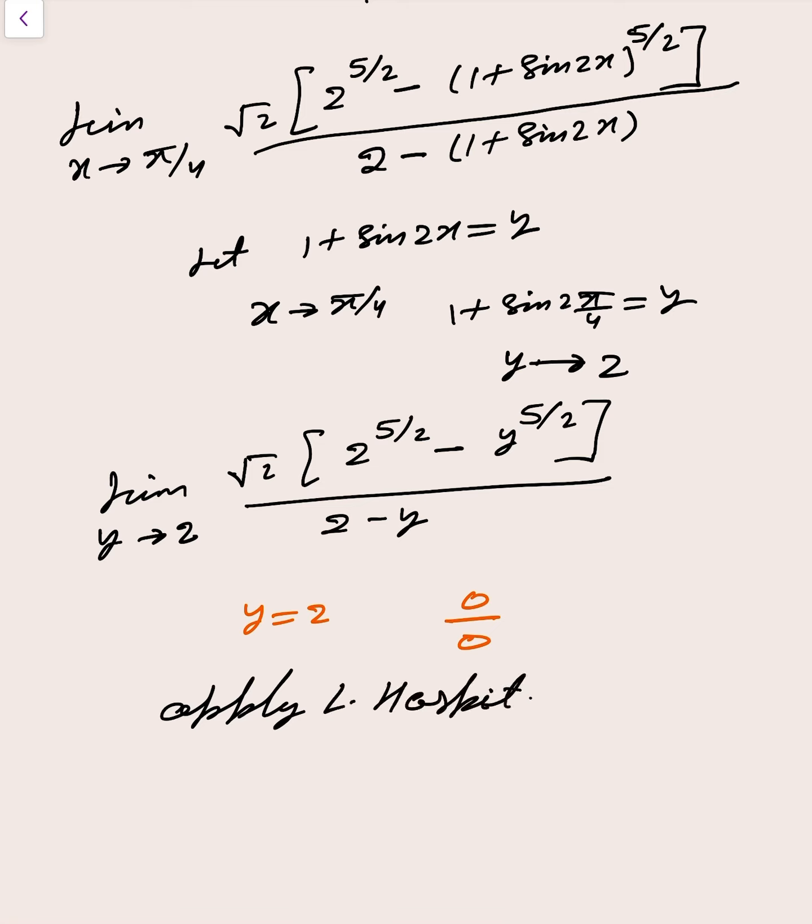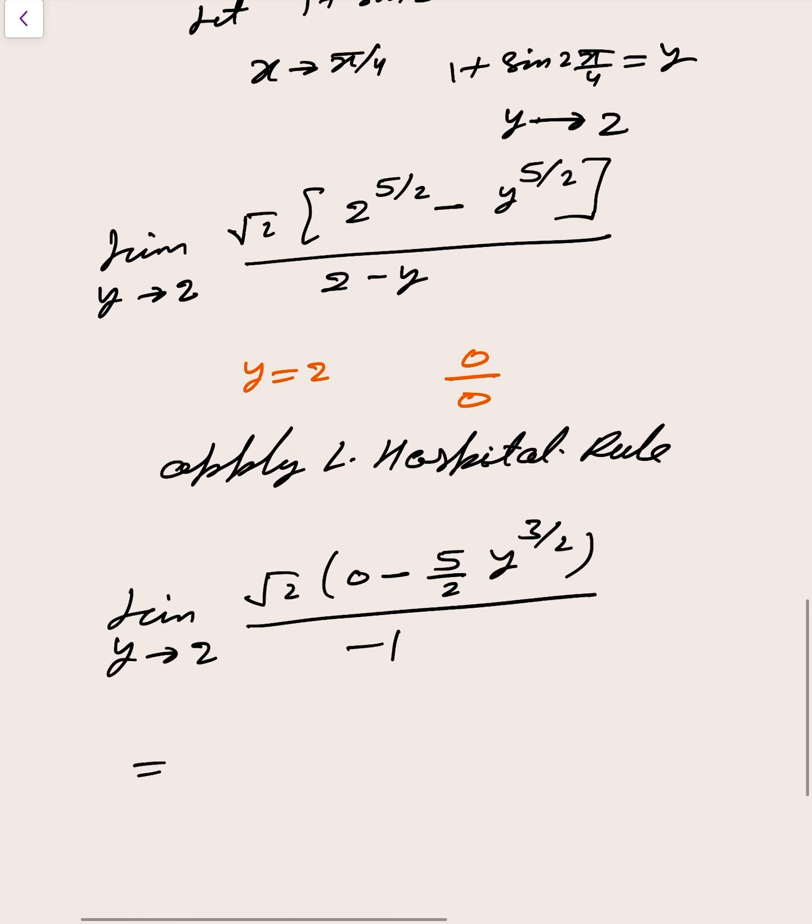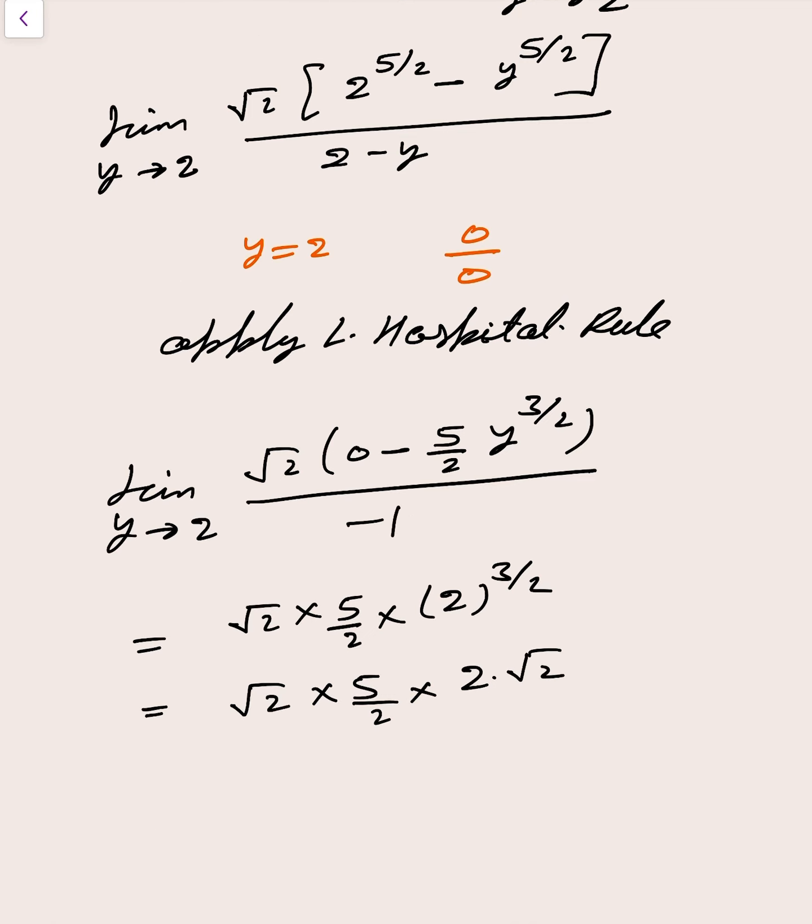So apply L'Hospital rule, then we got limit y tends to 2, that is root 2, here 0 minus 5 by 2 y to power 3 by 2 divided by minus 1. So finally, root 2 into 5 by 2 into 2 to whole power 3 by 2, and that is 2 into root 2. So 2 cancels out. Finally, 10 is the right answer.